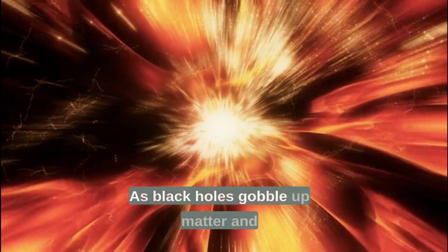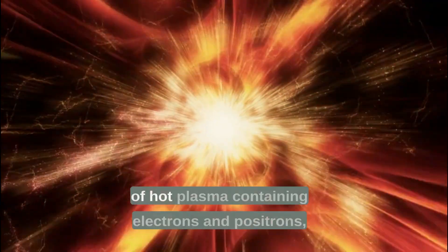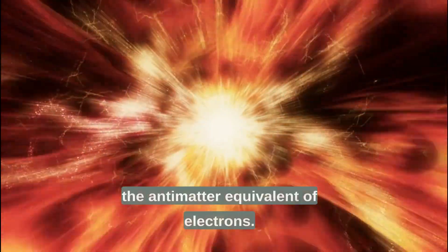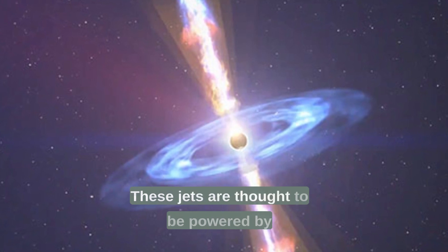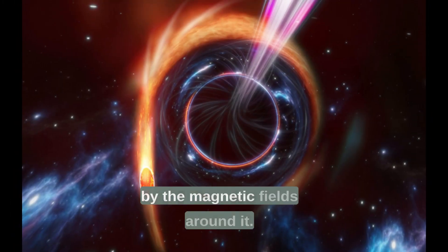As black holes gobble up matter and energy, they also spit out powerful jets of hot plasma containing electrons and positrons, the antimatter equivalent of electrons. These jets are thought to be powered by the rotational energy of the black hole or by the magnetic fields around it.